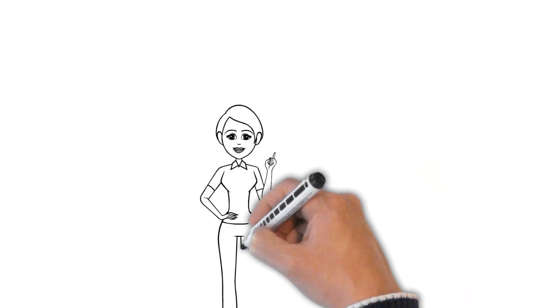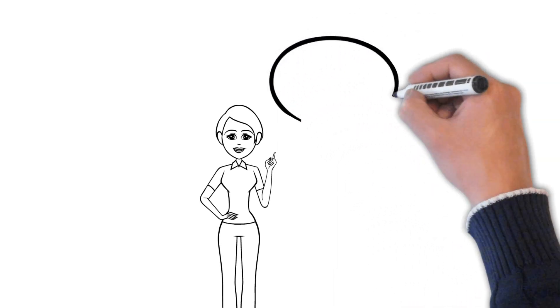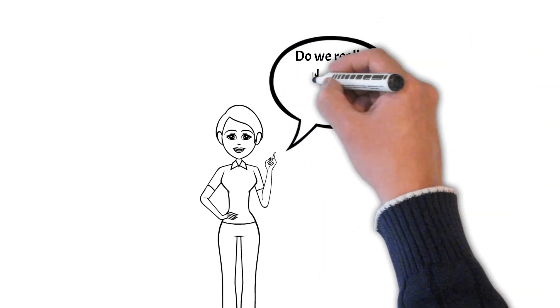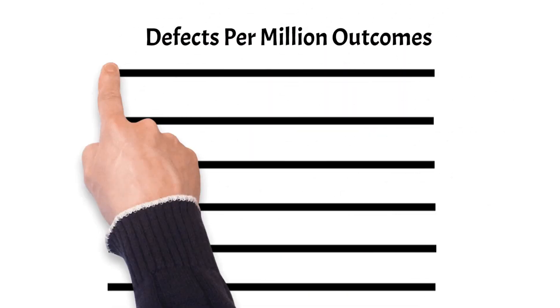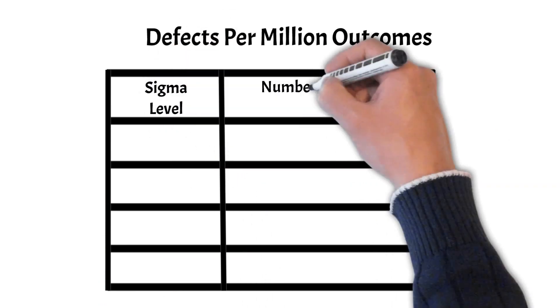This suggests that setting a Six Sigma standard may be unnecessary for every process, product, or service. If true, then where should standards be set? What about a 3, a 4, or even a 5 Sigma level?